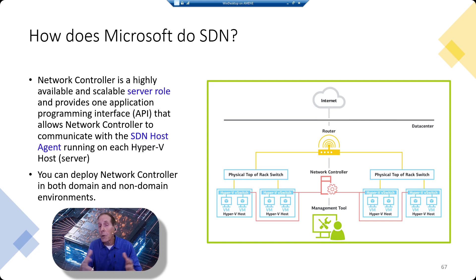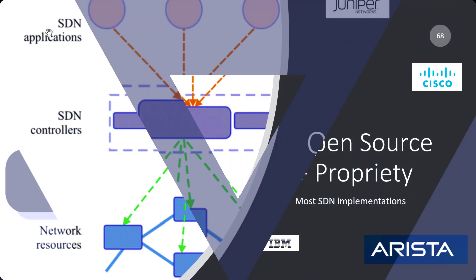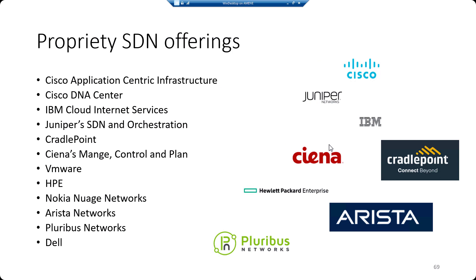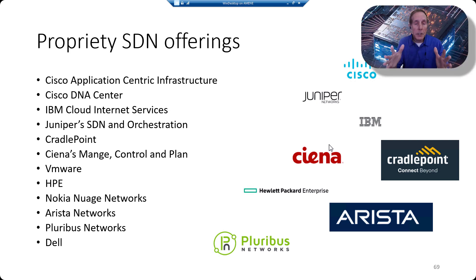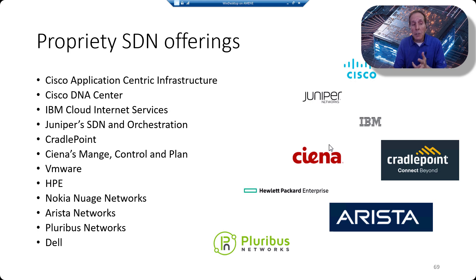Most SDN implementations have both open source and proprietary elements. There are also totally proprietary SDN offerings: Cisco has Application-Centric Infrastructure and Cisco DNA Center; IBM offers Cloud Internet Services; Juniper offers a complete proprietary SDN solution. Cradlepoint, Ciena, VMware, HPE, Nokia, Arista, and Dell all offer complete proprietary SDN offerings.